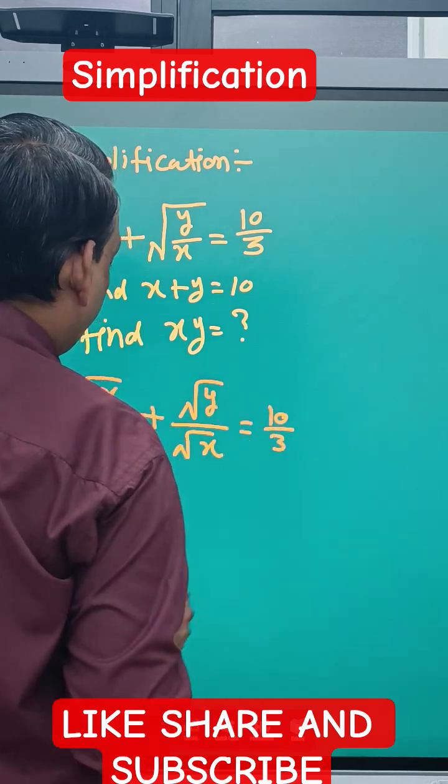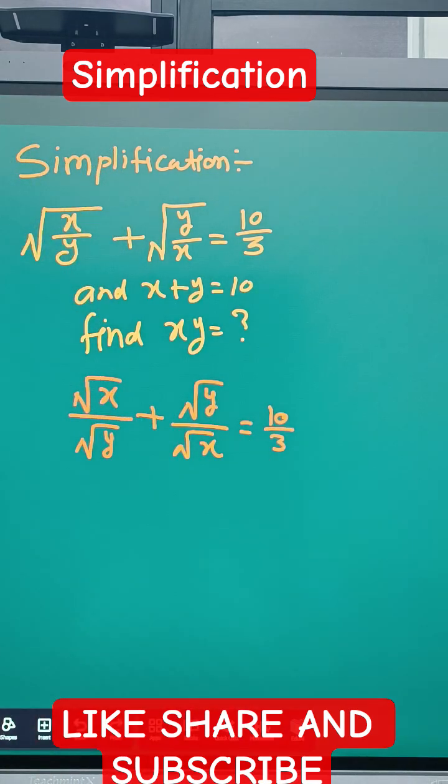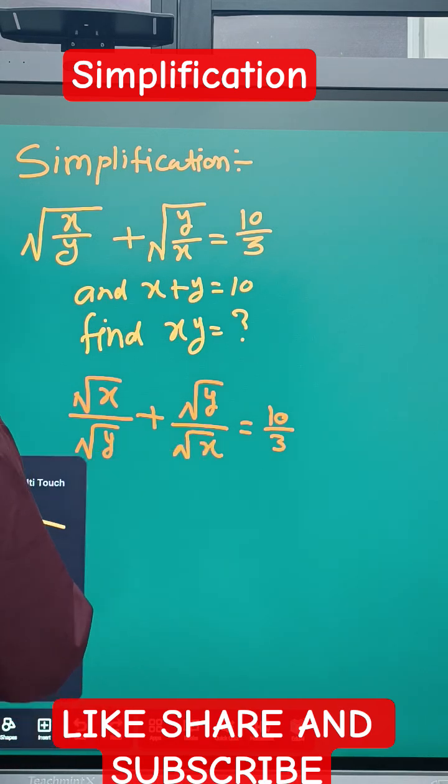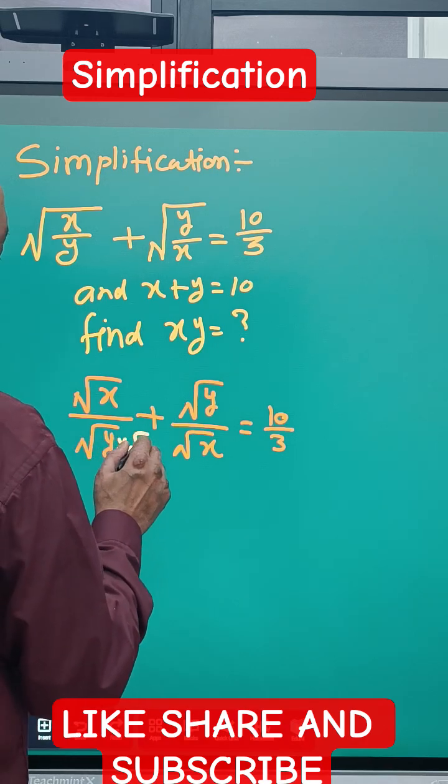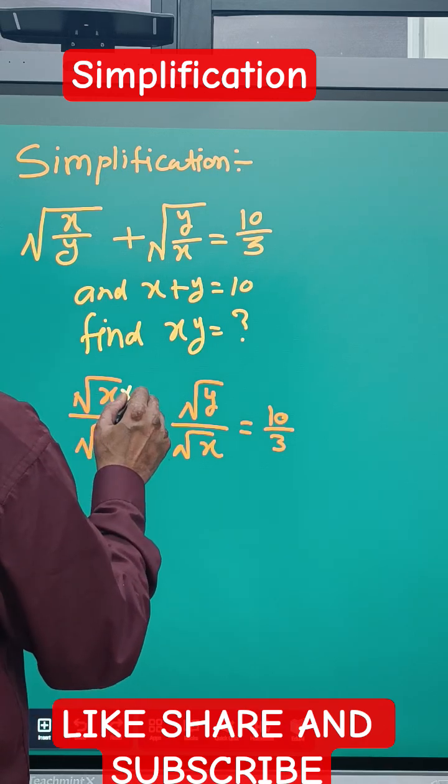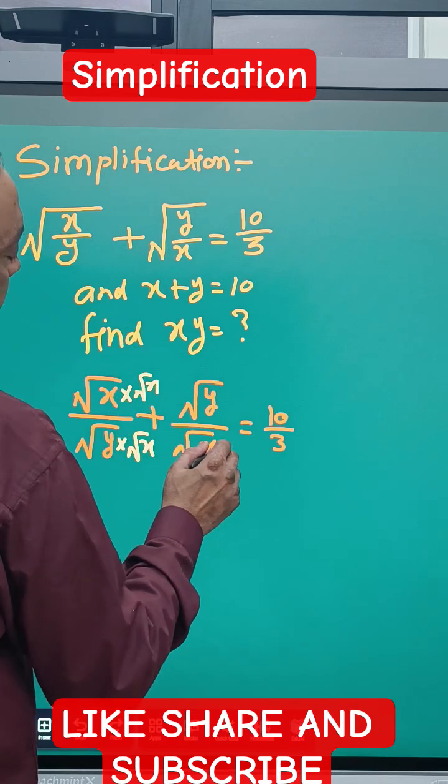Now we'll take the LCM, which is √x·√y. So we multiply the first term by √x on both numerator and denominator, and the second term by √y on both numerator and denominator.